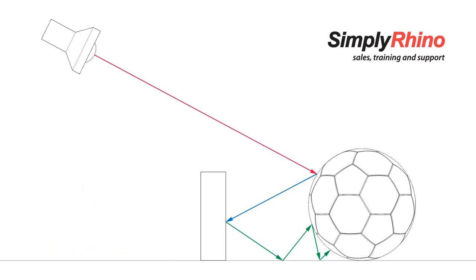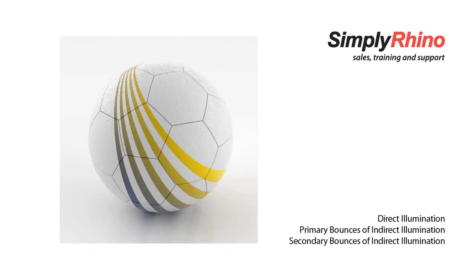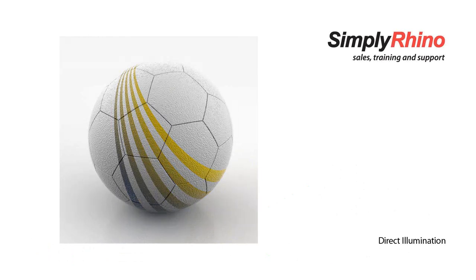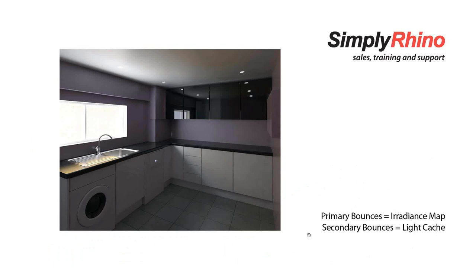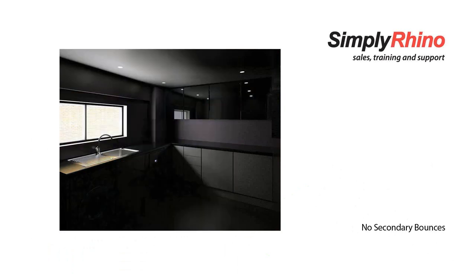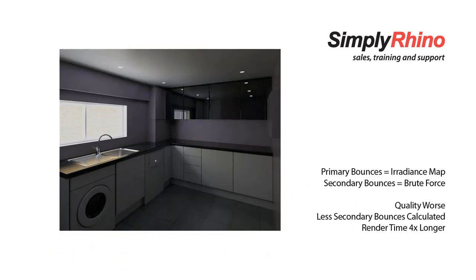That first bounce of indirect illumination contributes to the majority of global illumination in a well-lit scene. Where we have a less well-lit scene, such as a typical interior, we are more reliant on those secondary bounces. In a well-lit studio scene, there's very little difference when removing secondary bounces, and even with indirect illumination off completely we still get good illumination. However, in an interior scene, removing secondary bounces leaves very little illumination, and using the wrong render setup produces a lot of noise and misses much of the indirect illumination.